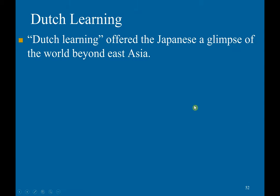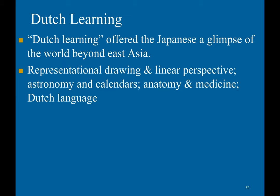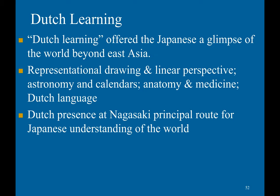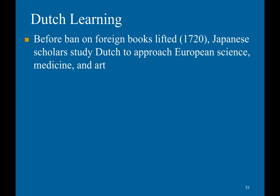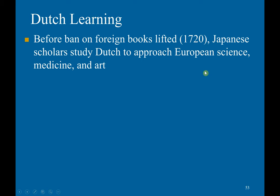Dutch learning offered the Japanese a glimpse of the world beyond East Asia. Despite Japan's heavy restrictions on interactions with foreigners, the Dutch introduced representational drawing and linear perspective, astronomy and calendars, anatomy and medicine, and the Dutch language. The Dutch presence in Nagasaki was the principal route for the Japanese to understand the world. Before the ban on foreign books was lifted in 1720, Japanese scholars studied Dutch to access European science, medicine, and art.